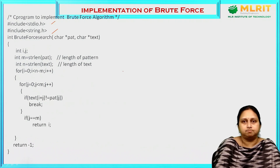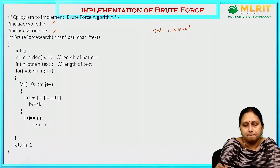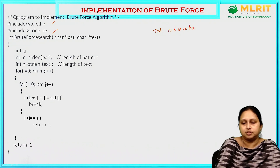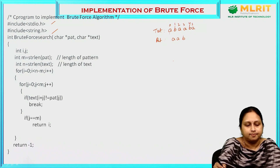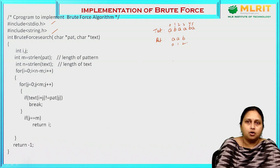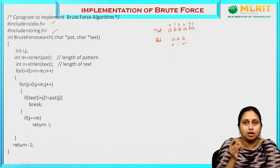Coming to the actual logic, let us take a small text: a, b, a, a, b, a. This is the text. The pattern is a, a, b. The text indexes are 0, 1, 2, 3, 4, 5 and the pattern indexes are 0, 1, 2. The brute force algorithm checks the first character of the text with the first character of the pattern. If matching, it checks the second character, then the third, and so on.